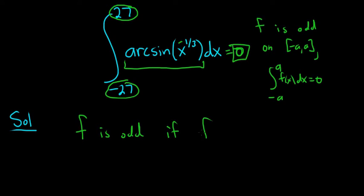If whenever you plug in negative x, you can pull out the negative sign and this is for all x, right, for all x. In this case we care about all the x's between negative 27 and 27.